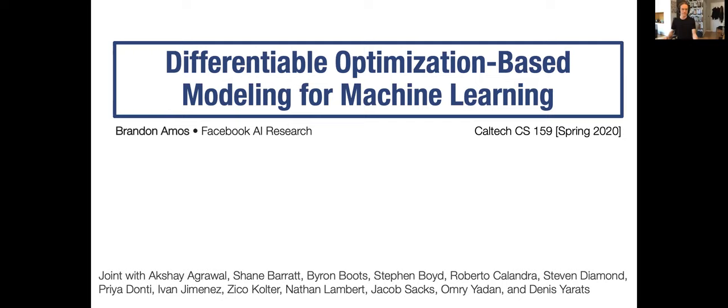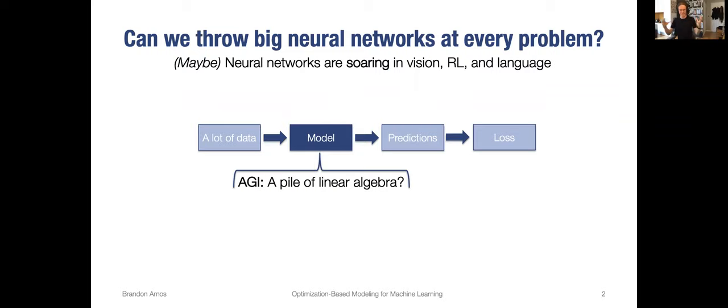If you have any questions or want to go on any tangents during this lecture, let me know. The content of this talk is focused around modeling and machine learning. The big question that a lot of people in the community are asking is: can we throw big neural networks at every problem, and can we continue doing this to get good results? It's not clear if we can or not.